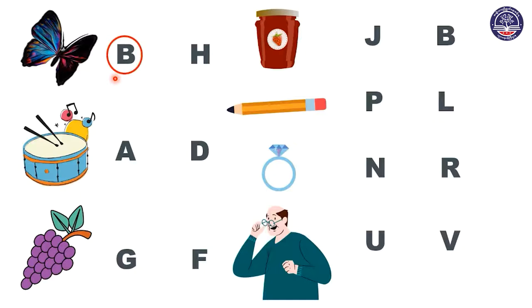Let's move on to the next picture. What picture is this? This is a drum. Yes. D, D, drum. Let's say D, D, drum together. Does drum start with letter A or D?